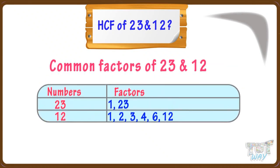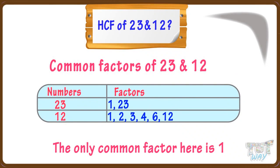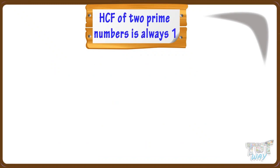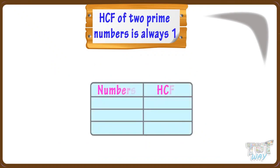Now let's find the common factors. The only common factor of 23 and 12 is 1, so HCF is also 1. Kids, remember: HCF of two prime numbers is always 1. For example, HCF of 7 and 13 is 1, HCF of 23 and 17 is 1, and HCF of 3 and 5 is 1.